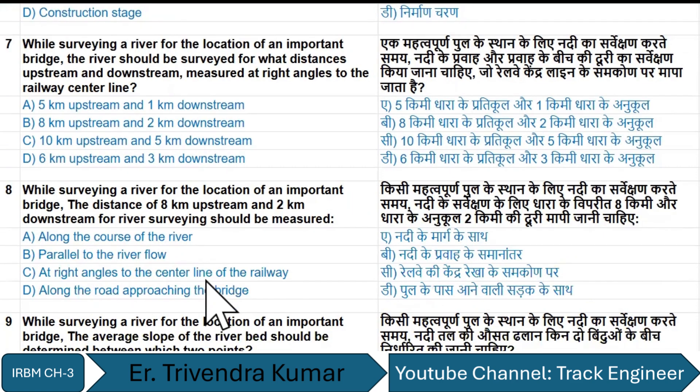Question number seven: while surveying a river for the location of an important bridge, the river should be surveyed for what distance upstream and downstream, measured at right angle to the railway center line?